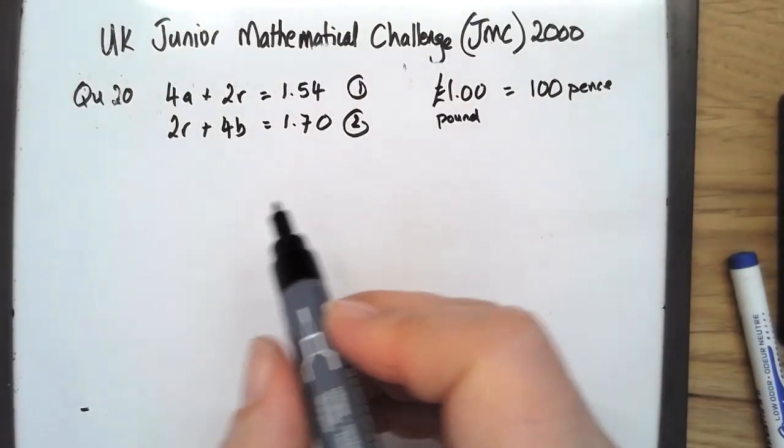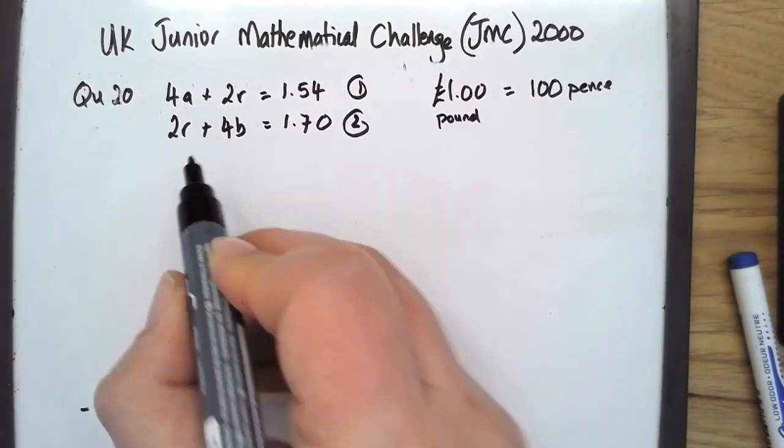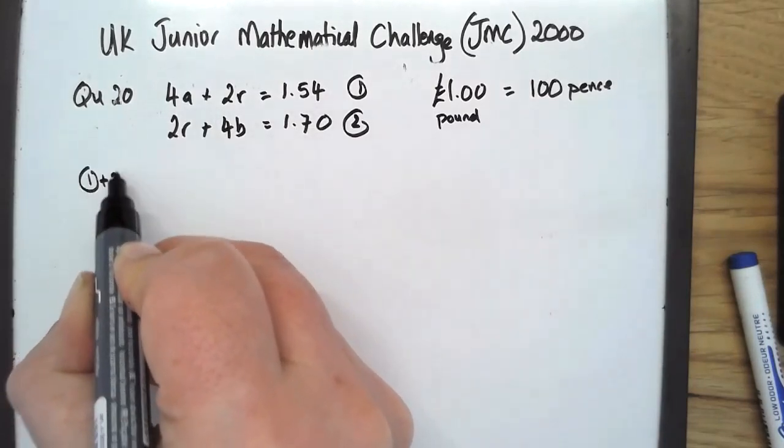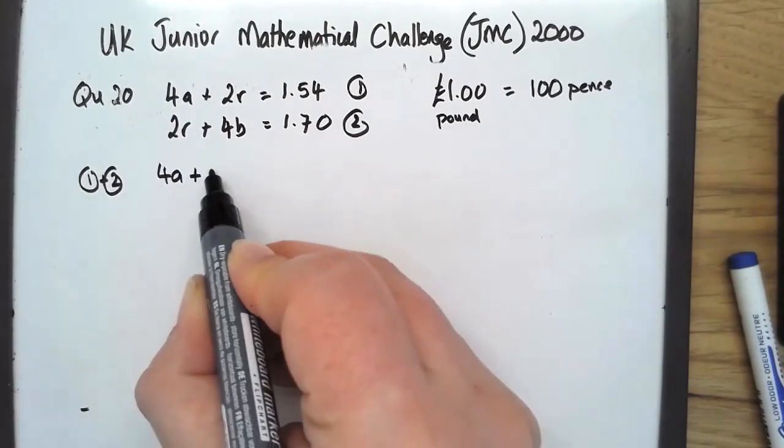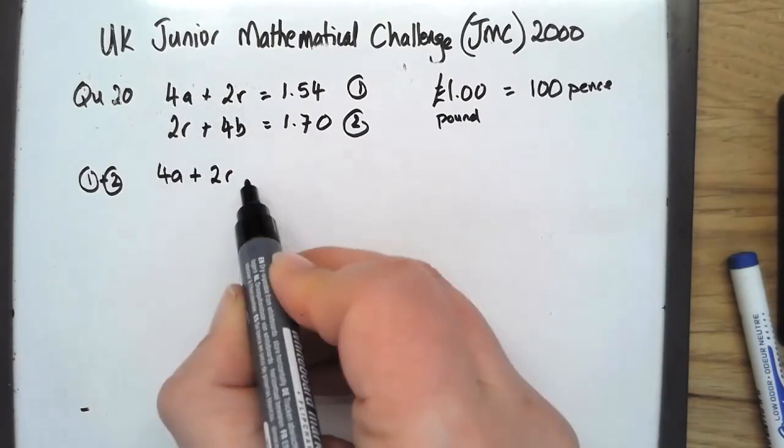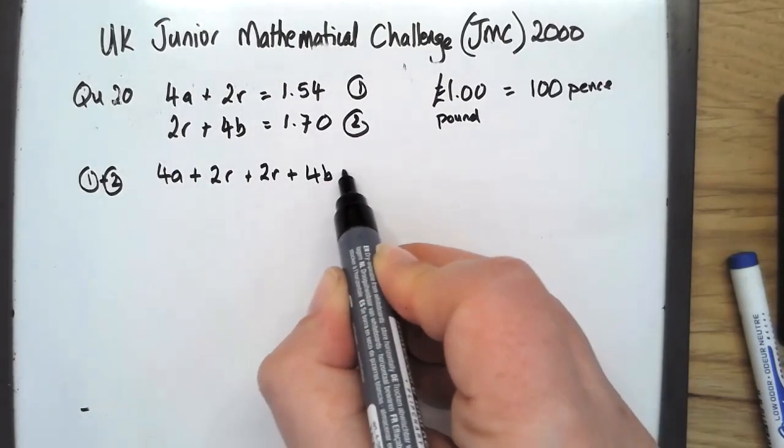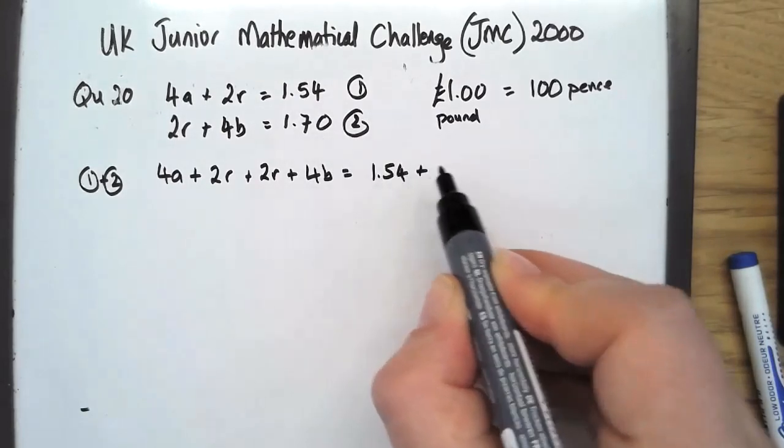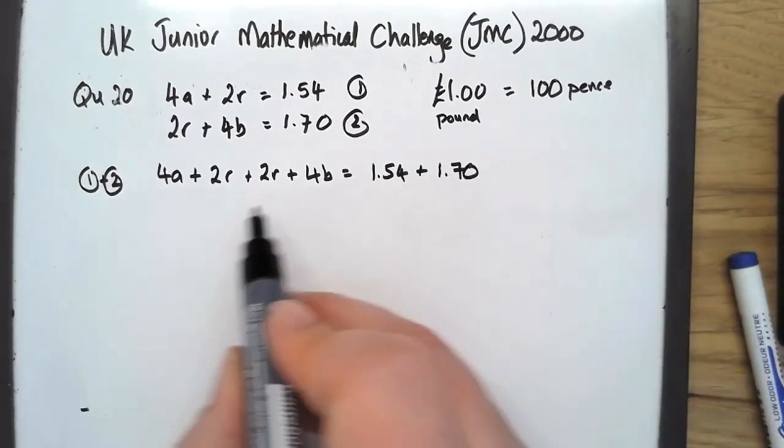What we're doing is we're going to add these two together. So we're going to add all the terms on the left and all the terms on the right. 154 add 170, we add all the terms up.